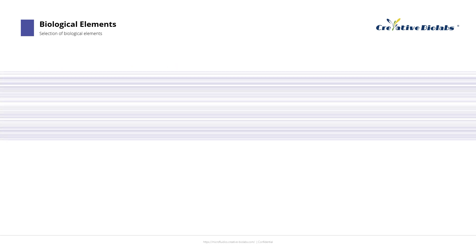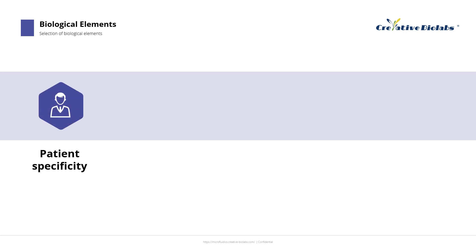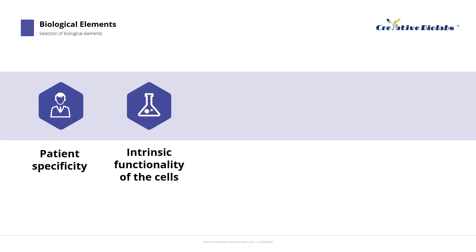In the context of OOC applications, several criteria should be considered when selecting an appropriate cell source. Firstly, patient specificity is a crucial factor. With the advent of iPSC technology, patient-derived stem cells have become easier to obtain with minimal invasiveness and can differentiate into various cell lineages. The intrinsic functionality of the cells is another key consideration, as OOCs are often required to reproduce tissue-specific physiological functions such as xenobiotic metabolism in the liver, barrier function in the gut and skin, and the contractility of cardiac and skeletal muscles.